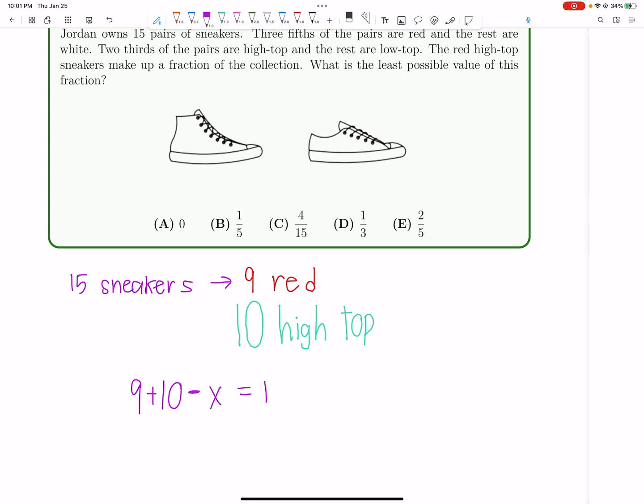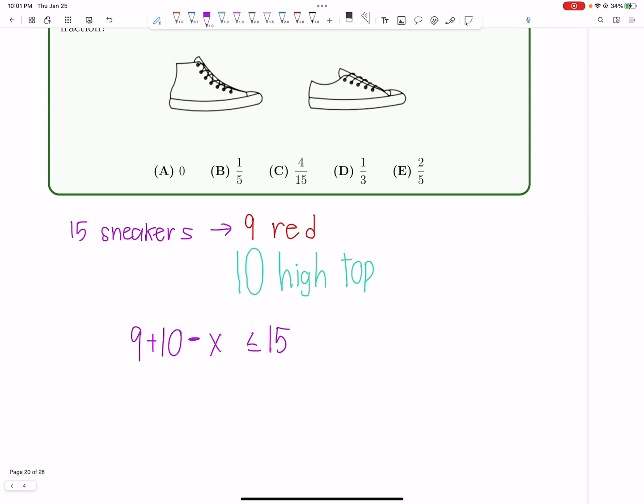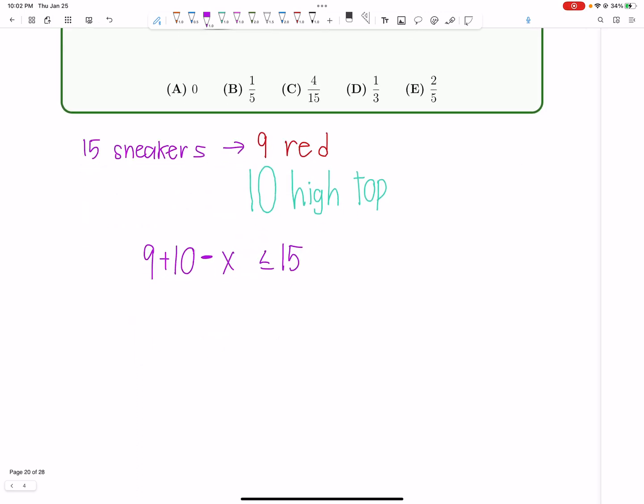This has to be equal to 15. Or rather, it does not have to be equal to 15. It has to be less than or equal to 15, right? Because we can think about this from a Venn diagram perspective.